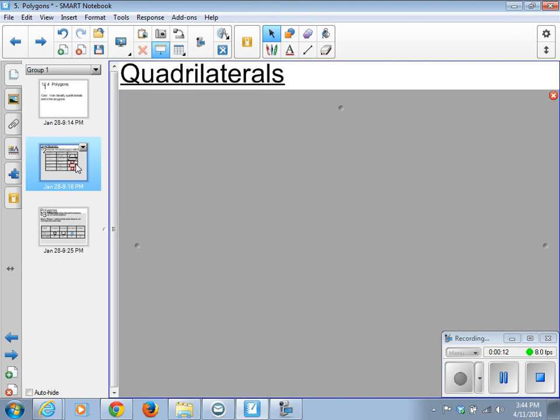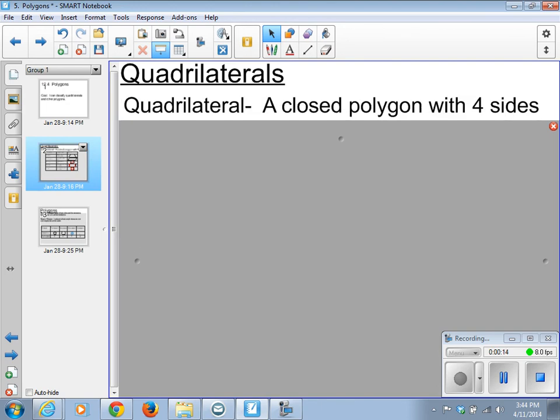We start with that first term, quadrilateral. This is a closed polygon with four sides. Four sides goes with the quad prefix.